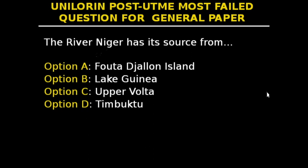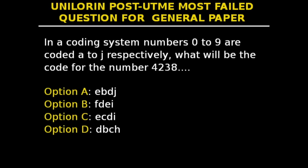This is question 28. The River Niger has its source from — options: Fouta Djallon highlands, Lake Guinea, Upper Volta, or Timbuktu. The River Niger is the principal river of West Africa, extending about 4,180 kilometers. Its drainage basin is 2,107,700 square kilometers. Its source is in the Guinea Highlands in southeastern Guinea. Fouta Djallon is a highland region in Guinea, making it the correct answer — option A.